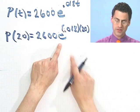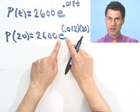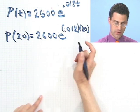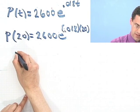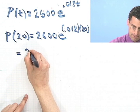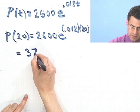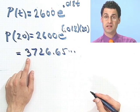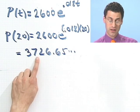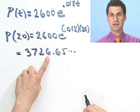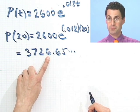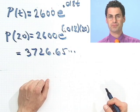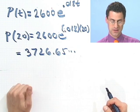And what does that equal? Well, you can use a calculator that has an e button. But if you work this out, this equals approximately 3,726.65. So that means that there is going to be about 3,726 million people on Earth in 1970. That's what this predicts. That's what this says there should have been.